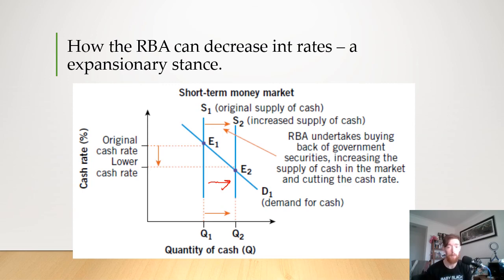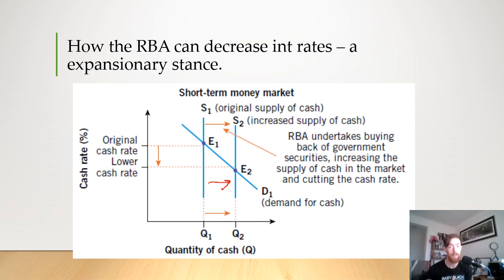And that's what's called open market operations. I hope this makes sense — it's relatively simple step-by-step. You just need to know those steps leading to the shift that causes the cash rate to either lower or increase. If you have any questions, feel free to email me — my email is in the description below. Next up, we're going to be talking about the different transmission mechanisms — basically how changes in interest rates affect the economy. I hope you have a wonderful day and I will talk to you next time.